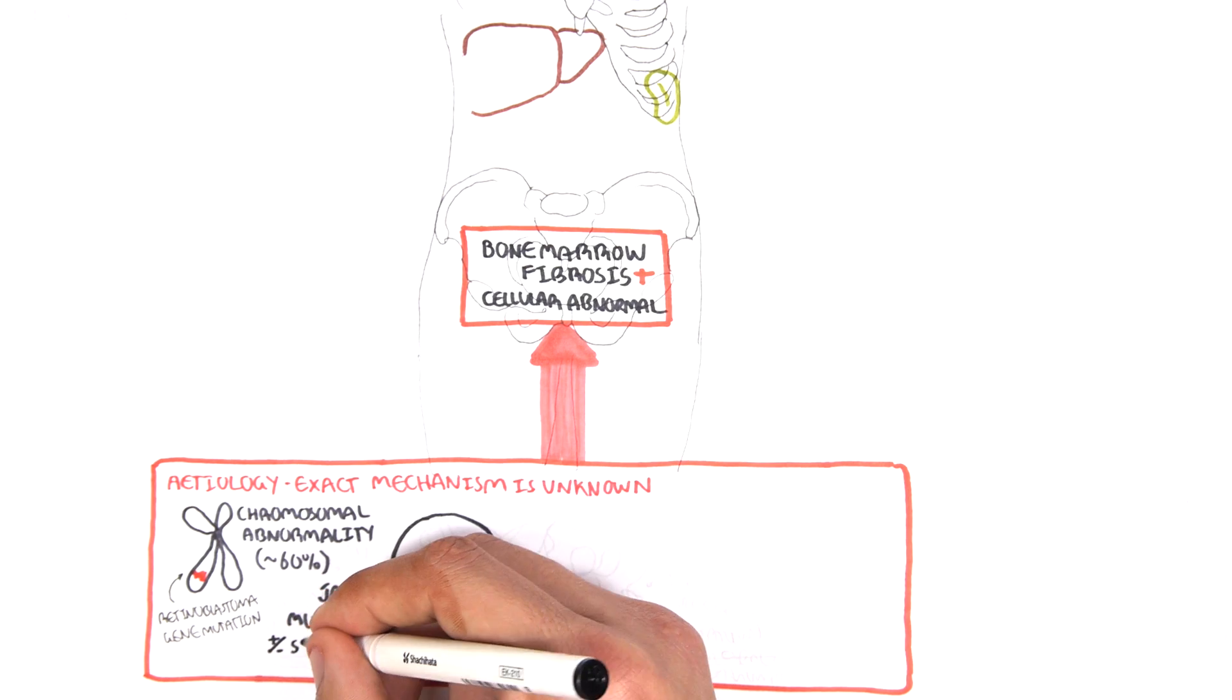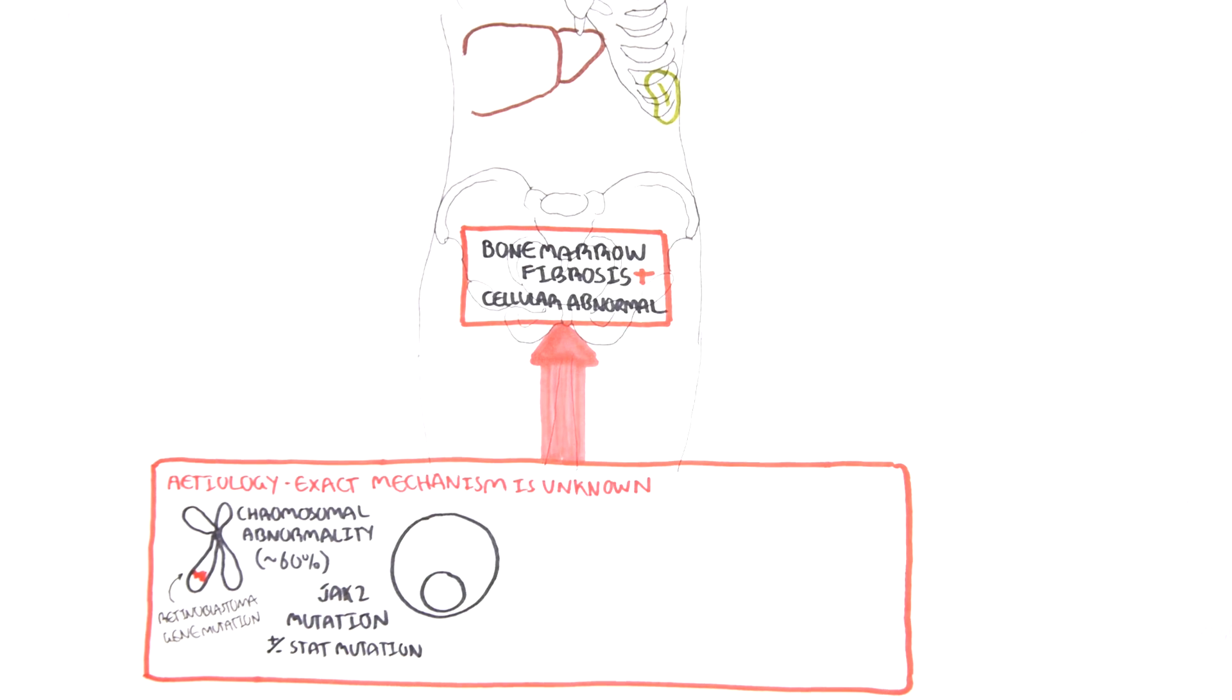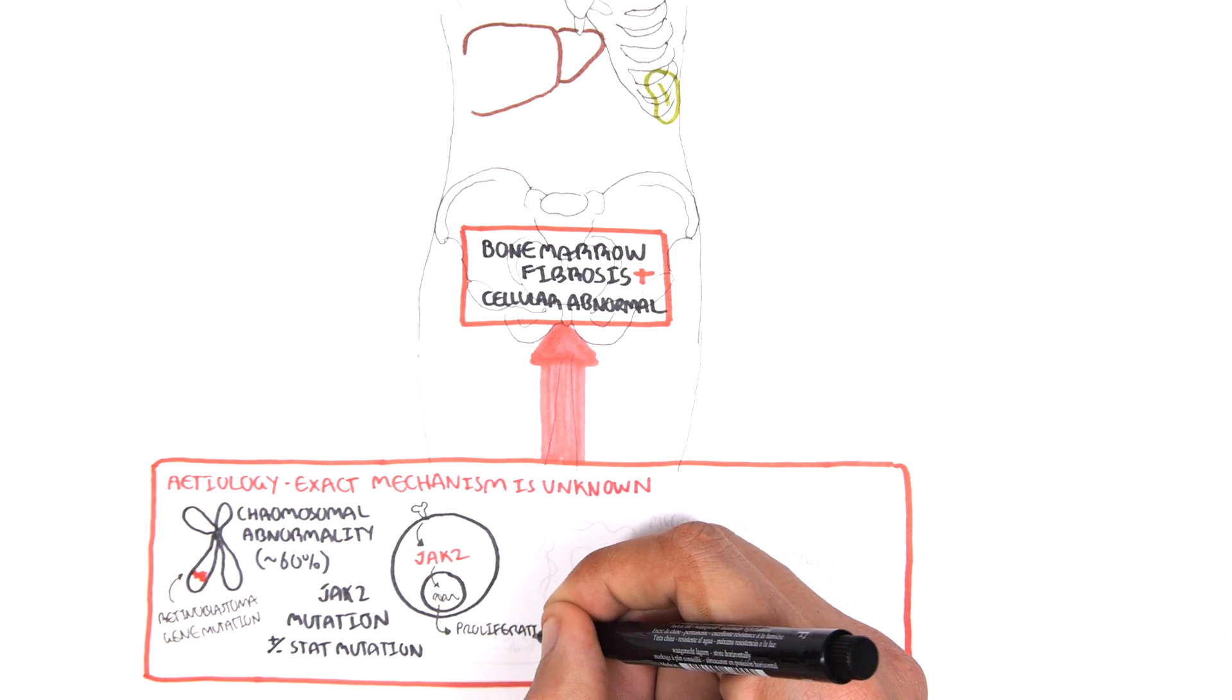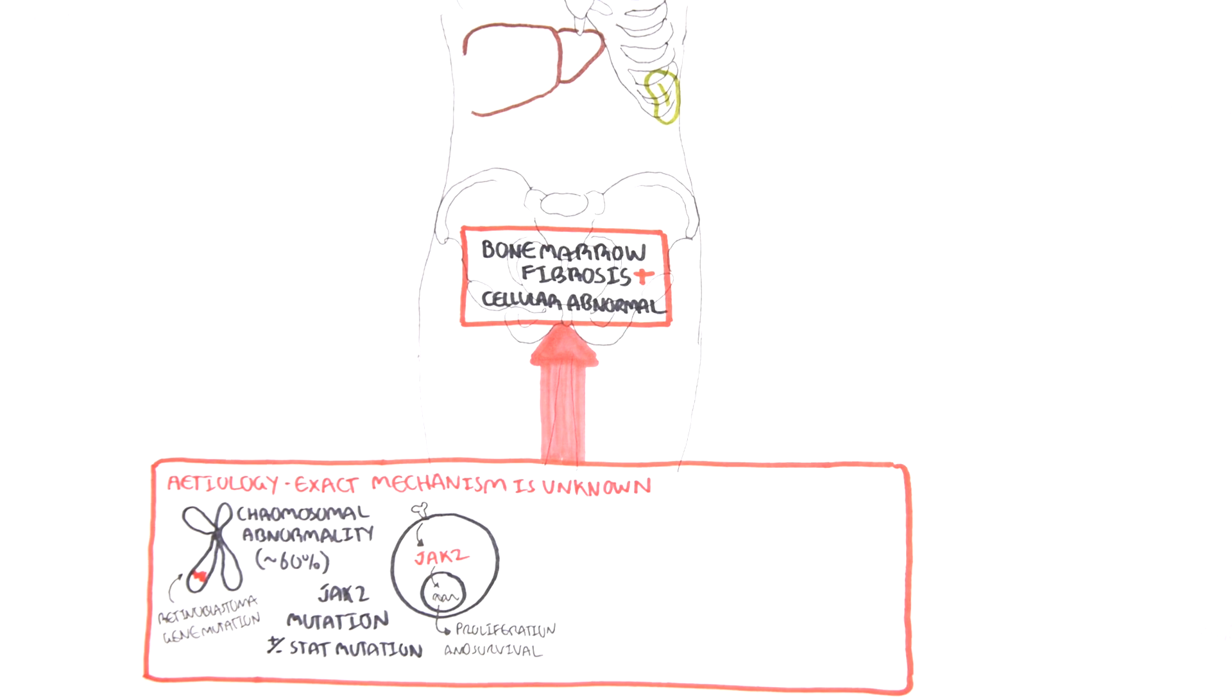Now, the JAK2 STAT mutation is a signaling pathway within cells that essentially allows the cells to proliferate and to survive.